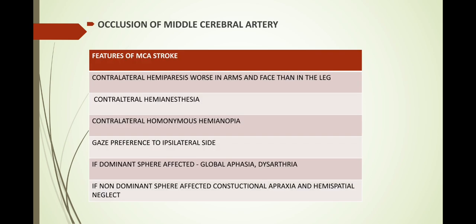Clinical features are produced based on the occlusion of certain arteries. Occlusion of the middle cerebral artery produces: contralateral hemiparesis — worse in the arms and face than the legs; contralateral hemi-anesthesia (loss of sensation on one half of the body); contralateral homonymous hemianopia; and gaze preference to the ipsilateral side. If the dominant hemisphere is affected, there is global aphasia and dysarthria. If the non-dominant hemisphere is affected, there is constructional apraxia and hemispatial neglect.